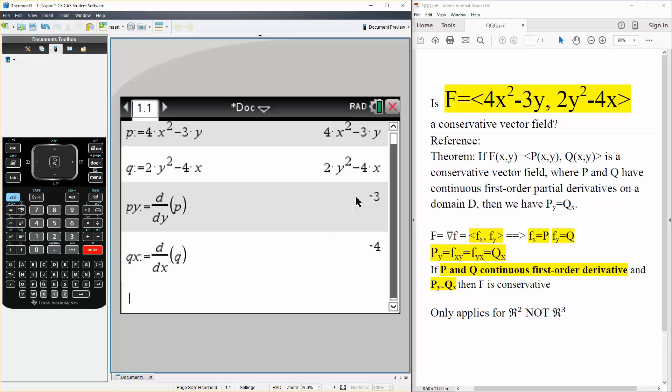and if you notice, we have negative 3 and negative 4. If Py and Qx is equal, then it would be conservative. And that's all we need to do.